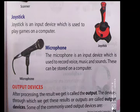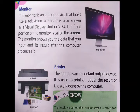The first output device is the monitor. The monitor is an output device that looks like a television screen. It is also known as a Visual Display Unit. The monitor shows you the data that you input and its result after the computer processes it.